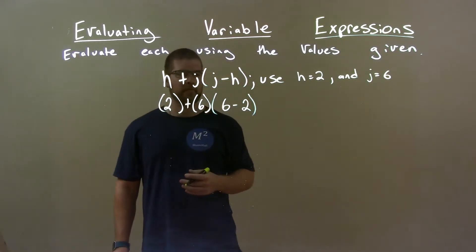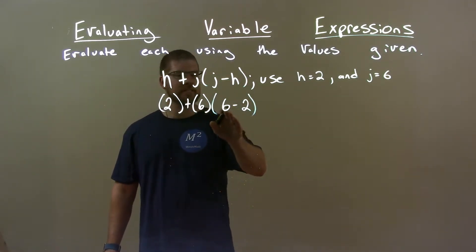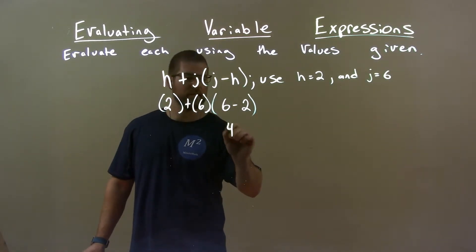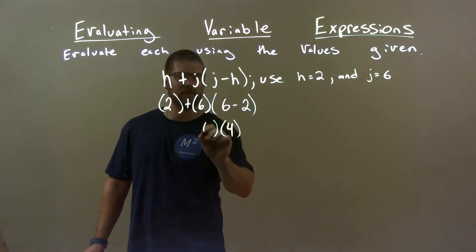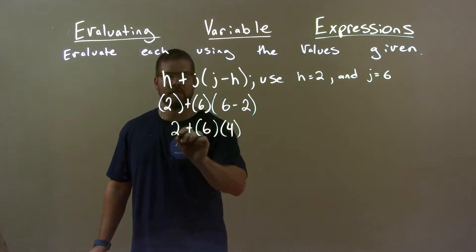So time to simplify. Parentheses first. 6 minus 2 is 4. Got that in there. Bring down everything else.